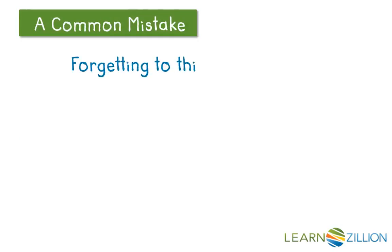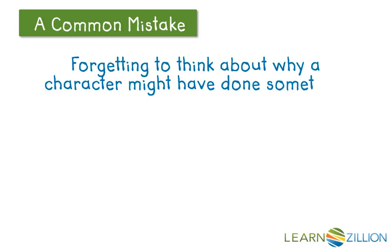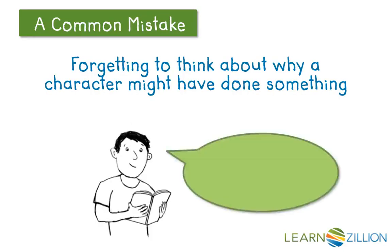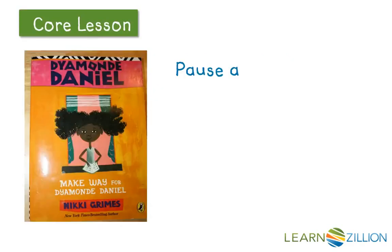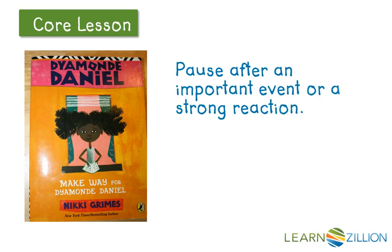A common mistake when thinking about why characters act a certain way is actually forgetting to think about why a character might have done something. So maybe you don't know why a character did that, and you think, well, he just did that because. To figure out why a character might have done something, first we're going to pause after an important event or a strong reaction.